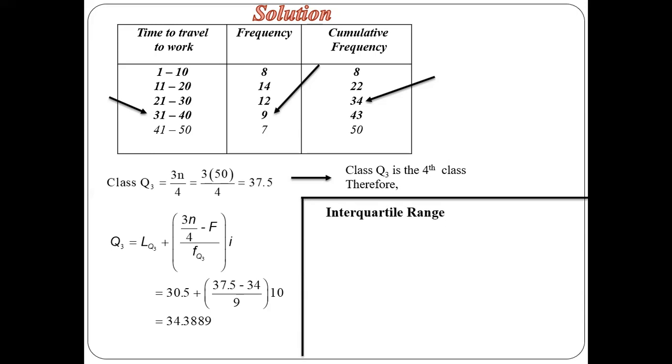So from here, calculating our interquartile range, we get Q3 minus Q1, which gives us 20.6746.